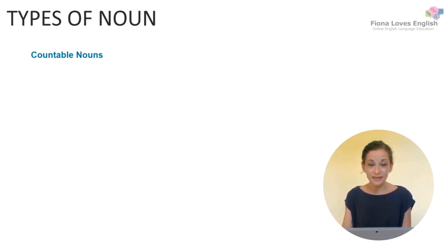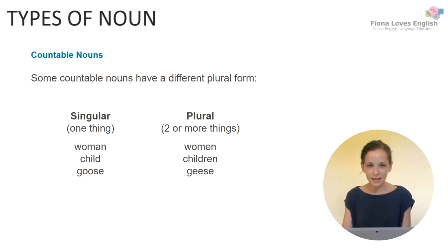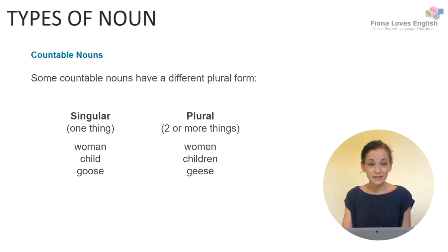Some countable nouns have a different plural form. Woman is a singular noun, spelt W-O-M-A-N and pronounced 'woman' — for example, 'I'm a woman.' However, the plural is women, spelled W-O-M-E-N — for example, 'Many of my friends are women.' The next singular noun is child, and its plural is children. The next singular noun is goose — an animal similar to a duck but larger — and its plural is geese, where the double O changes to a double E.